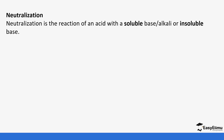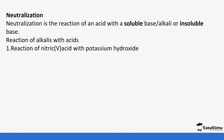Ionic equations can also be derived from neutralization reactions. A neutralization reaction is where acids react with bases to form salt and water, forming a neutral solution. When you look at the reactions of alkalis with acids, you can derive an ionic equation. For example, the reaction of nitric acid with potassium hydroxide: potassium hydroxide in aqueous state reacts with nitric acid in aqueous state to form potassium nitrate in aqueous state plus water in liquid state.